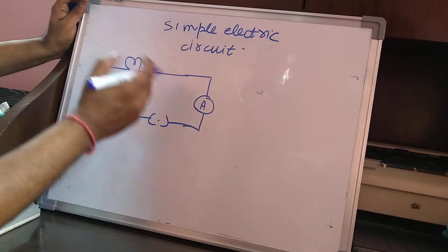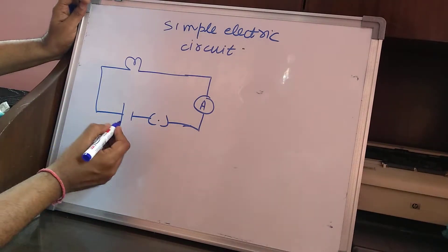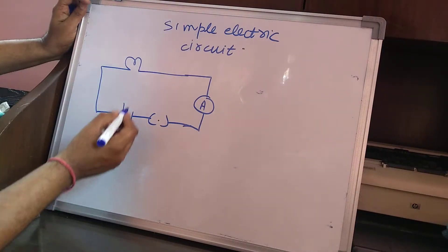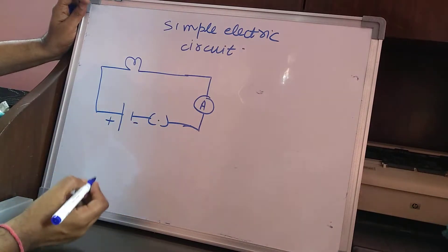This is a symbolic representation of various electrical elements that we use in an electric circuit. For example, this is a symbolic representation of a cell in which we have one long line and one short line. The longer line is a positive terminal and the shorter line is called the negative terminal.